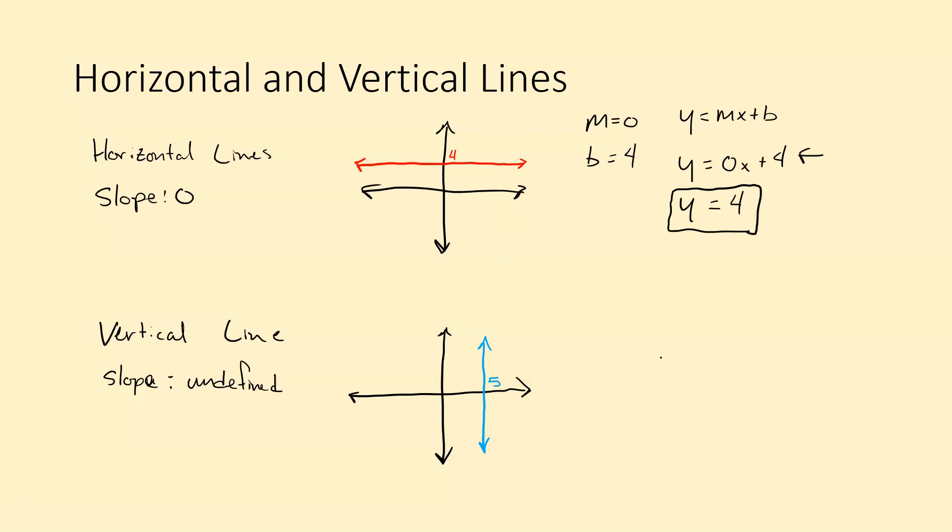So how would we write that? You might be wondering if m is undefined and b does not exist either, right? We don't have a b value. So what we do is it's similar to the horizontal line. The horizontal line is y equals 4. And what that means is if you think about that equation, no matter what x value you plug in,